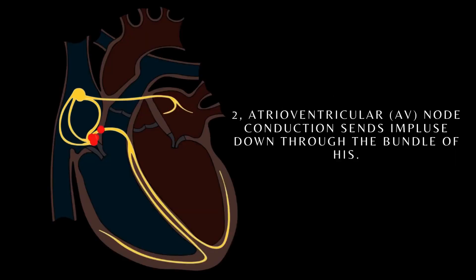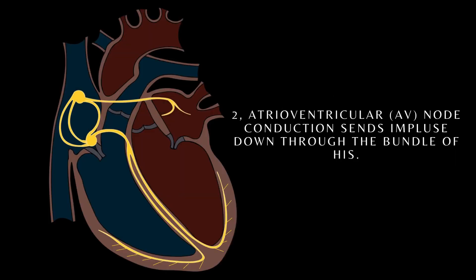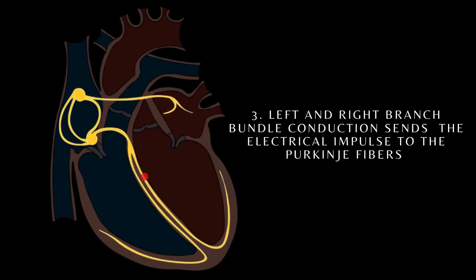The impulses from the SA node reach the AV node. They are delayed for about a tenth of a second. This delay allows the atria to contract and empty their contents into the ventricles before ventricular contraction begins.